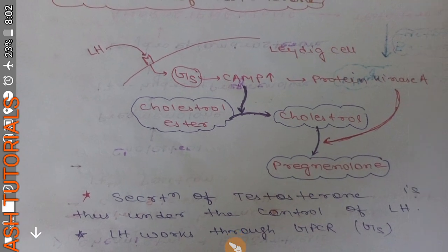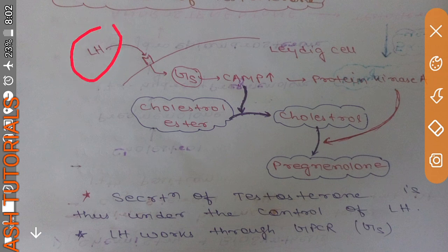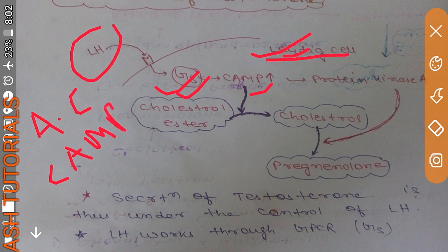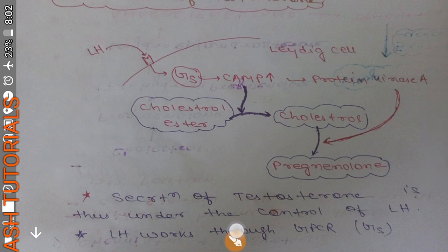Testosterone synthesis is under the control of LH hormone. LH binds to receptors present on the Leydig cells, leading to activation of a GPCR — specifically the G-stimulatory type. G-stimulatory activation leads to activation of adenylate cyclase, which converts ATP into cAMP.